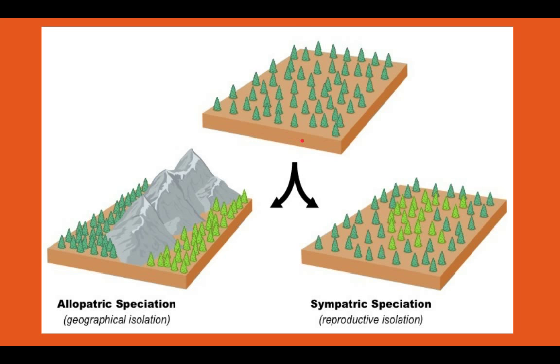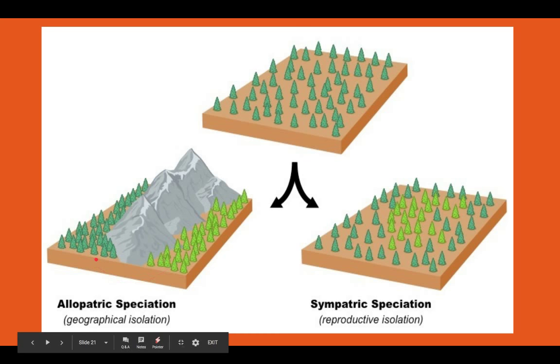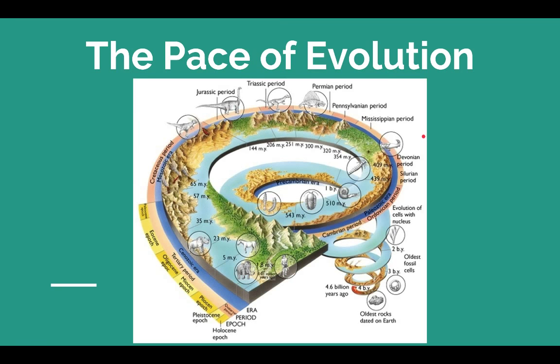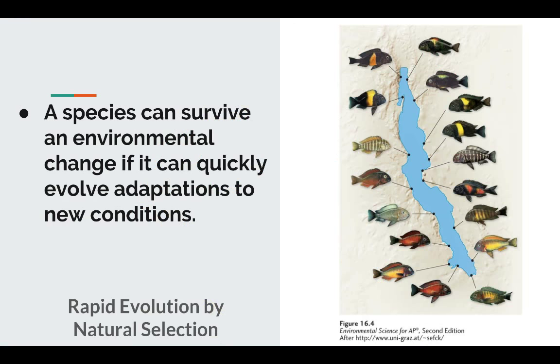Quickly reviewing the two types of speciation: allopatric speciation involves a geographic separation between two species, so they evolve separately and eventually are unable to interbreed. Sympatric speciation has no geographic isolation — it just occurs naturally. Now that we know how certain species arise, we're going to look at the pace of evolution — how fast or how slow does this occur? You've been told in past biology classes this is a very slow process, but there are instances where this can also happen within a lifetime.